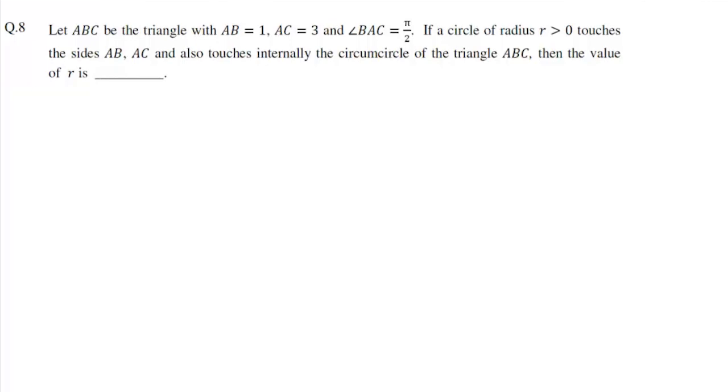This question states: let ABC be a triangle with AB equals 1, AC equals 3, and angle BAC equals π/2. If a circle of radius R greater than 0 touches the sides AB and AC and also touches internally the circumcircle of triangle ABC, then the value of R is.